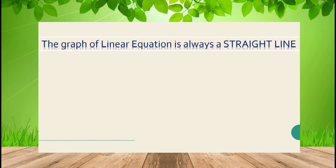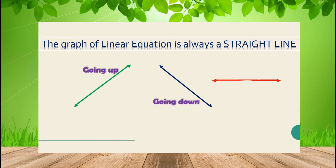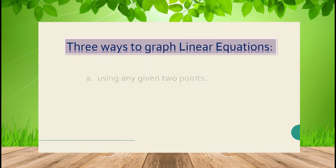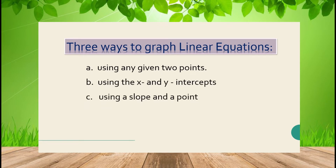The graph of a linear equation is always a straight line. A straight line may go up, it may go down, or it can go level. There are three ways to graph linear equations: using any given two points, using the x and y intercepts, and using a slope and a point.